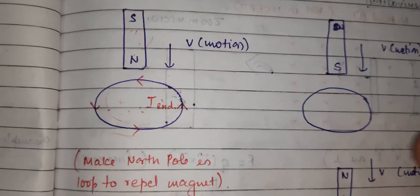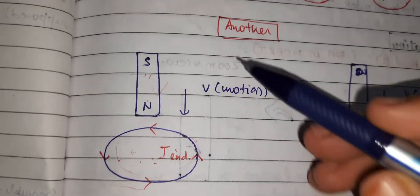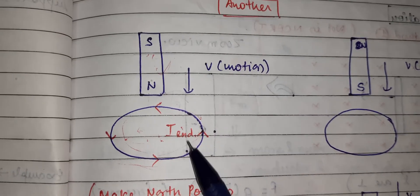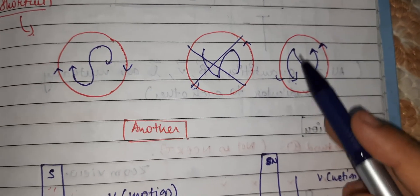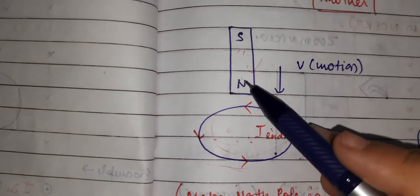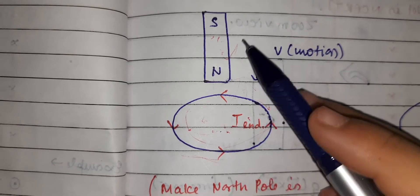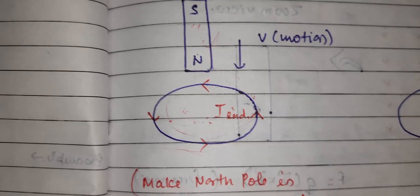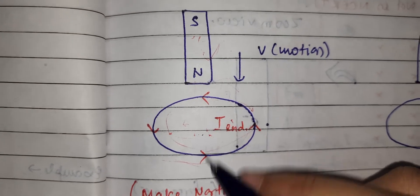So in this example, with the bar magnet's north pole coming toward the loop, the induced current flows in the anticlockwise direction. According to the clock face rule, an anticlockwise current forms a north pole, so the induced current creates a north pole on the loop's face to repel the approaching north pole of the magnet — the loop does not want the magnet to come close.